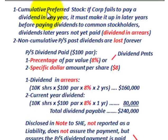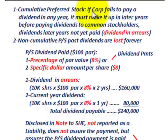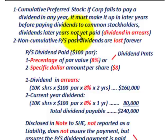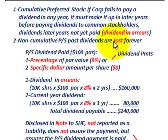Let's look at the dividend feature on this cumulative preferred stock. There are two features: cumulative preferred stock and non-cumulative preferred stock. With cumulative preferred, if a corporation fails to pay dividends in any year, it must make up those payments in later years before paying any dividends to common stockholders. If dividends in later years are not yet paid, they are in arrears. With non-cumulative preferred stock, past dividends are lost forever and don't have to be paid.